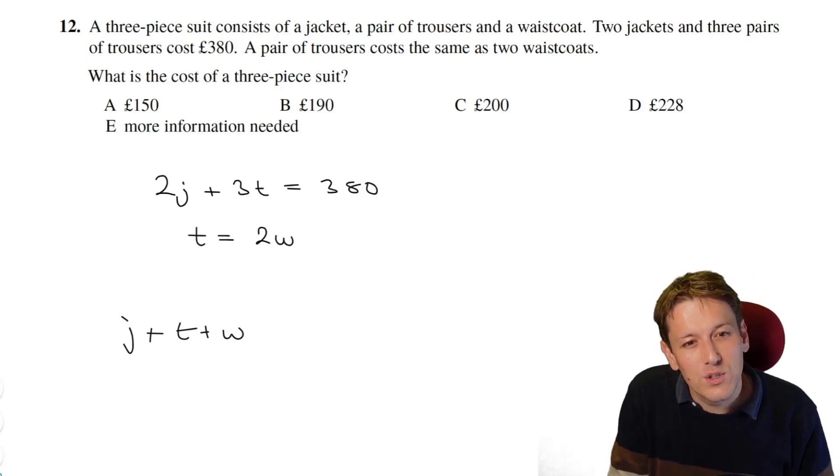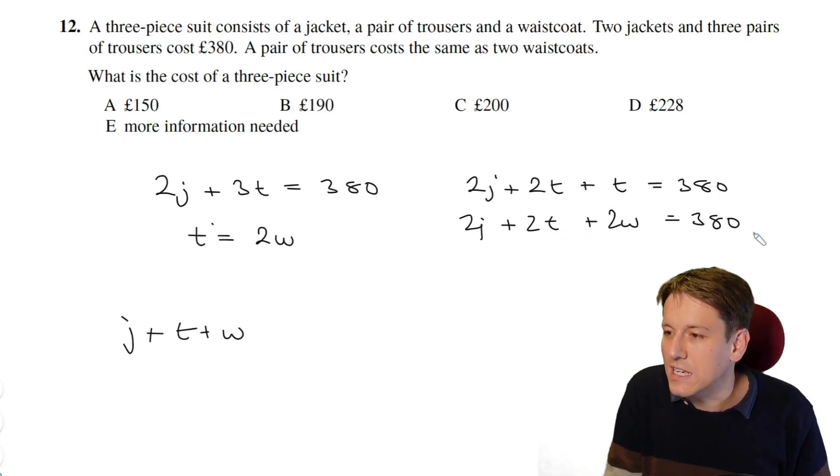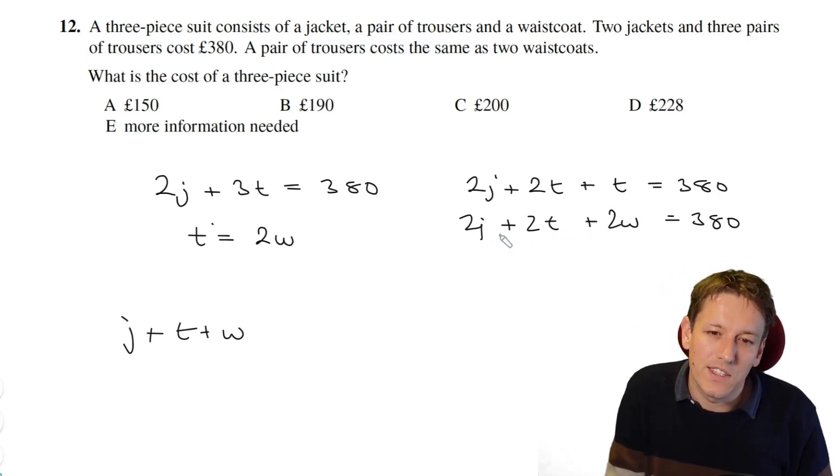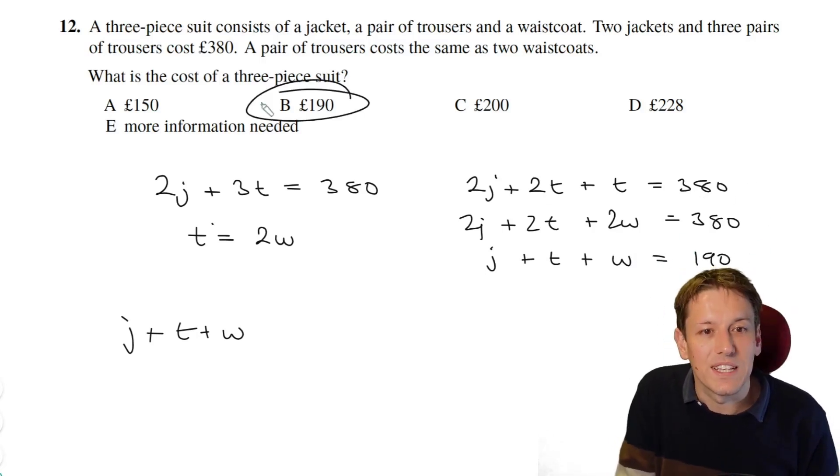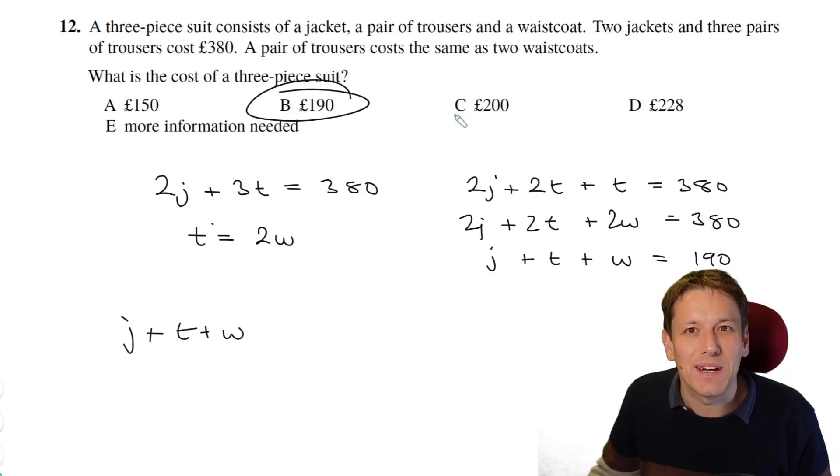And the little trick here is that, well, if you look at this first equation, 2j plus 3t, I could write that as 2j plus 2t plus another t, that would be 380, but then the t is 2w, so I've got 2j plus 2t plus 2w, that's 380. And now, if I divide this whole thing by 2, I get j plus t plus w is 380 divided by 2, which is 190. And so the answer is B, 190 pounds.